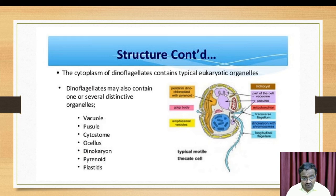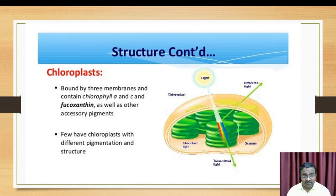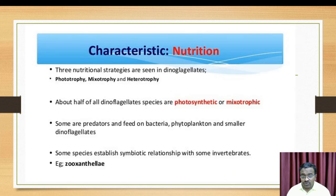Many unique structures are present in dinoflagellates: vacuole, pusule, cytosome, osseolus, dinocaryon, and pyrenoids. Chloroplasts are also present, containing three types of pigments — chlorophyll a, chlorophyll c, and fucoxanthin, which is one of the chief pigments.